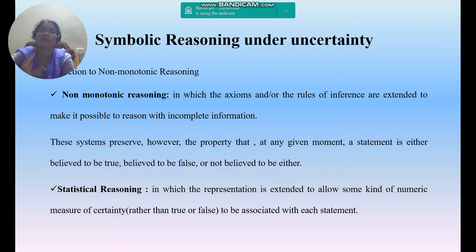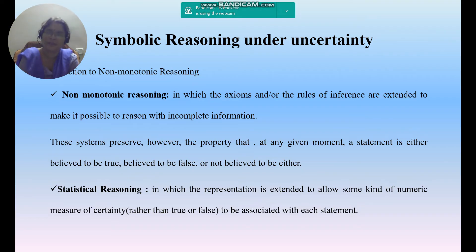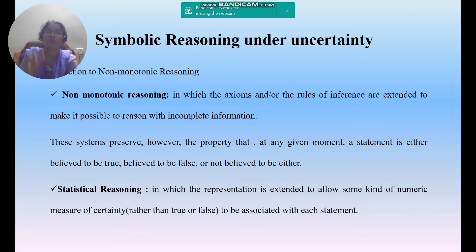Another kind of reasoning under uncertainty is statistical reasoning, where we calculate probabilistic measures. The value nearer to one is considered true; others can be set aside. A numerical measure of certainty is associated with each statement. Bayesian belief networks, to be discussed in coming classes, are a good example. For instance: the grass outside the house was wet — either due to sprinklers or rain the previous night. We calculate the probability of each statement, and whichever value is nearer to one is concluded as true.